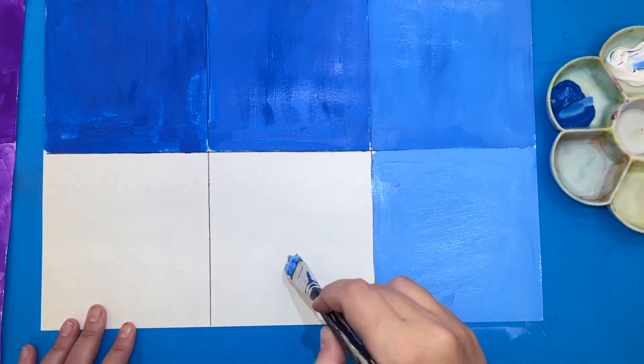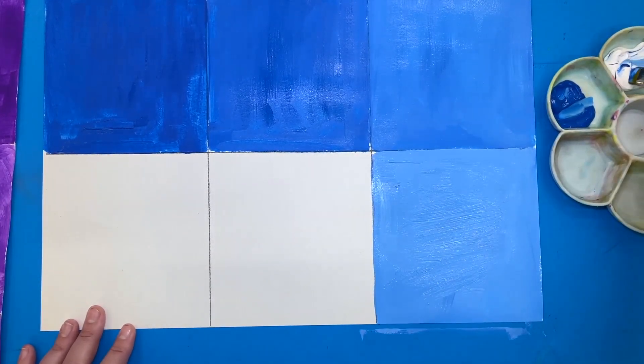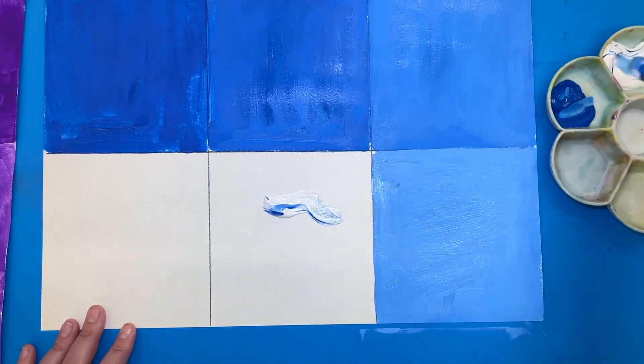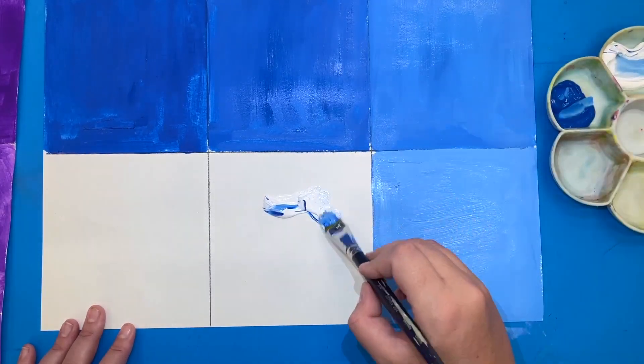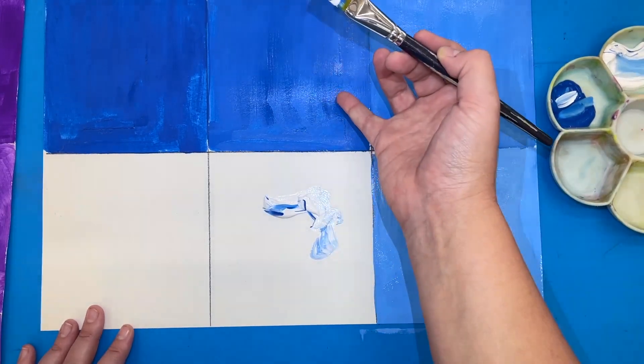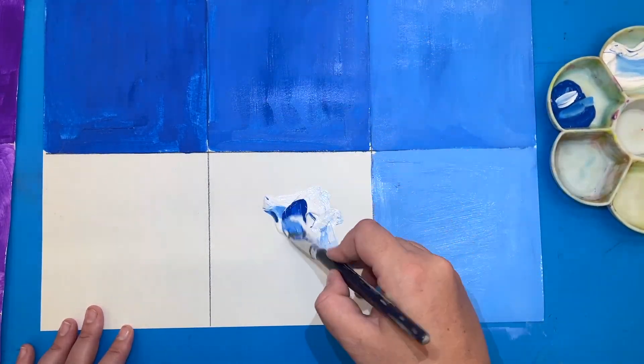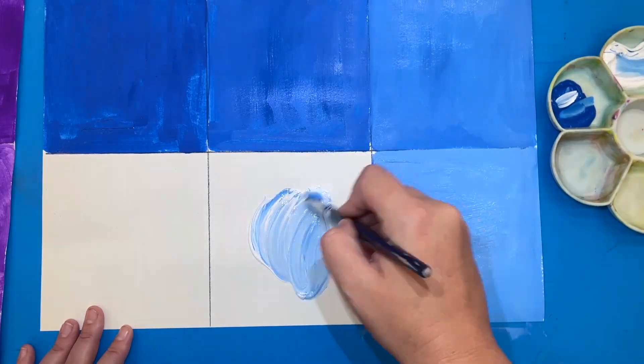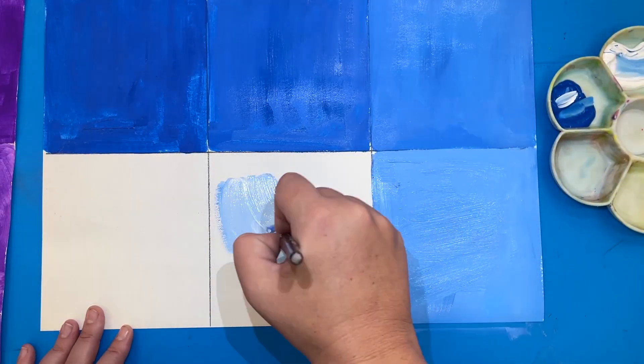On this square, the second to last square, we're actually going to start with our white. We're going to take way more white than we are going to take blue. So more white and then a small tap of blue, kind of like how we did for this one except with the white. That much and swirl it together and spread it out.